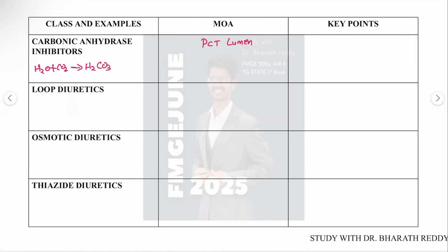Regarding carbonic anhydrase inhibitors: when water and CO2 combine, they form carbonic acid (H2CO3). The carbonic anhydrase enzyme converts this into H2O, CO2, and then HCO3⁻ and H⁺. By inhibiting this enzyme, carbonic acid accumulates. These drugs are used in patients with hyperventilation or those at high altitude.